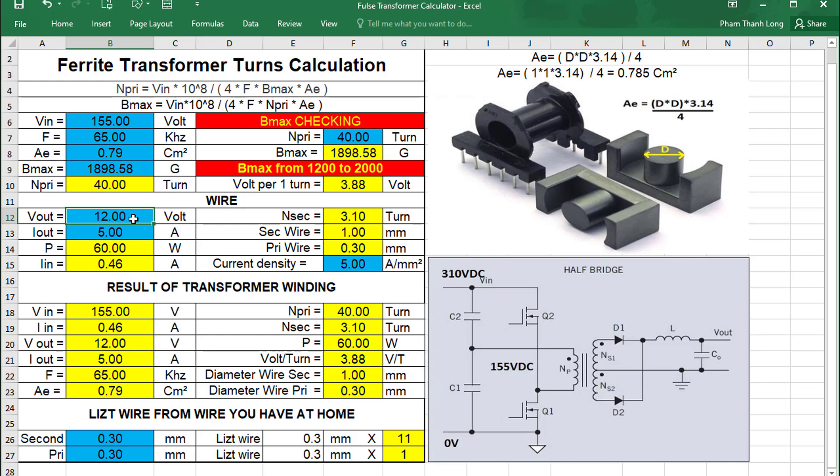Next, we will enter the output voltage and current as we want. Voltage is 24 volts, current is 5 ampere. And current density is from 5 ampere to 7 ampere, we choose 5 ampere. And this is the result after we calculate.